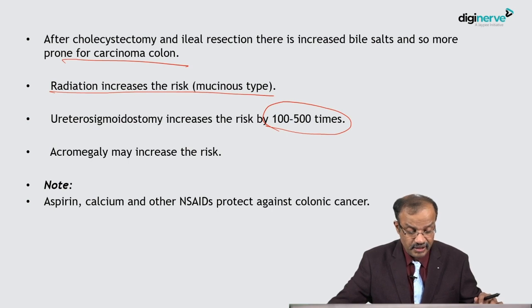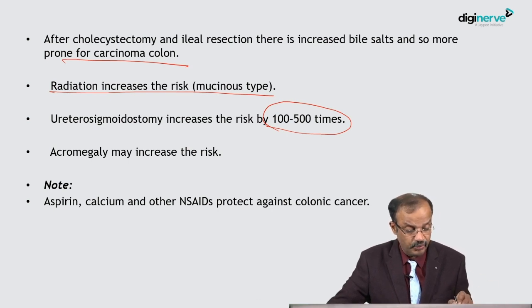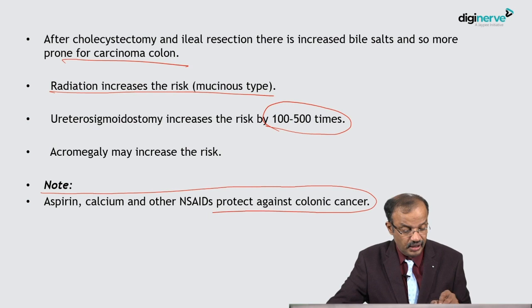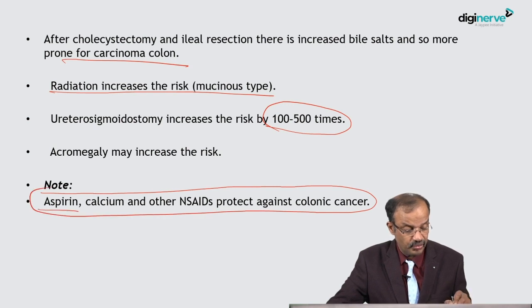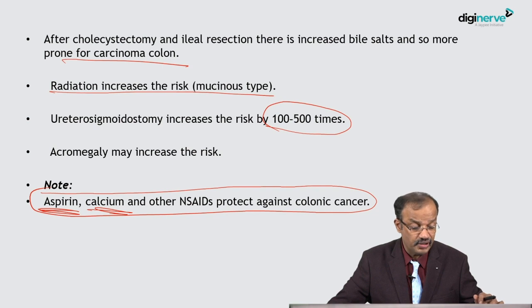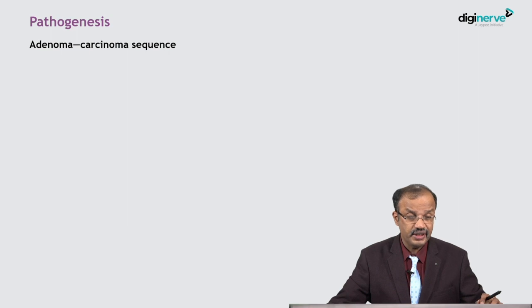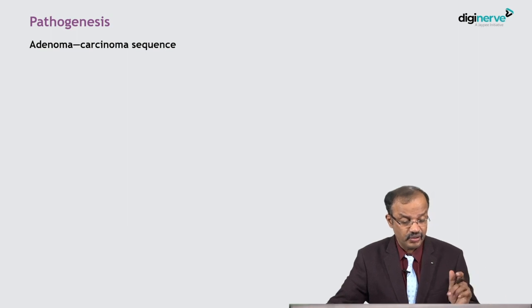Aspirin, calcium, and related agents protect against colonic cancer. Those taking long-term aspirin and calcium have a reduced chance of developing carcinoma colon. These are the risk factors for colonic cancer — you should be able to write them one by one, noting which are protective and which increase risk. The pathogenesis involves the adenoma-carcinoma sequence.